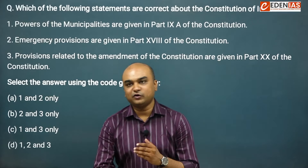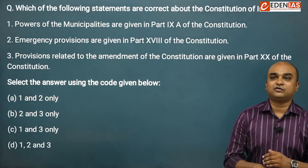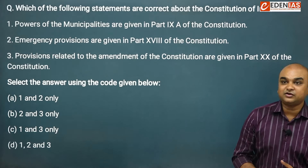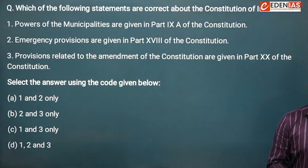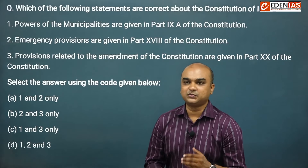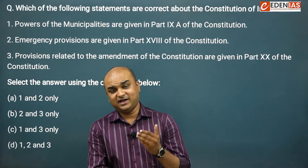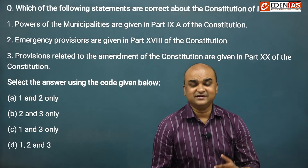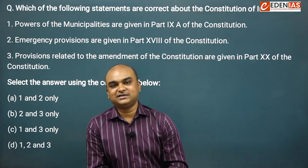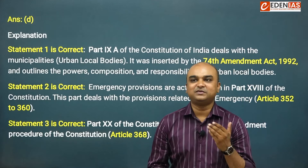Next question: which of the following statements are correct about the Constitution? Statement 1: powers of municipalities are given in Part 9A. Statement 2: emergency provisions are given in Part 18. Statement 3: provisions related to the amendment of the Constitution are given in Part 20. Yes — Part 9A deals with municipalities, Part 18 deals with emergencies, and Part 20 deals with amendment of the Constitution, the procedure for which is mentioned under Article 368. The right answer was D — all the statements are correct.